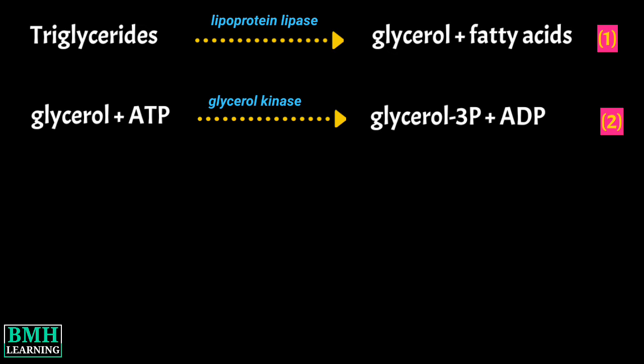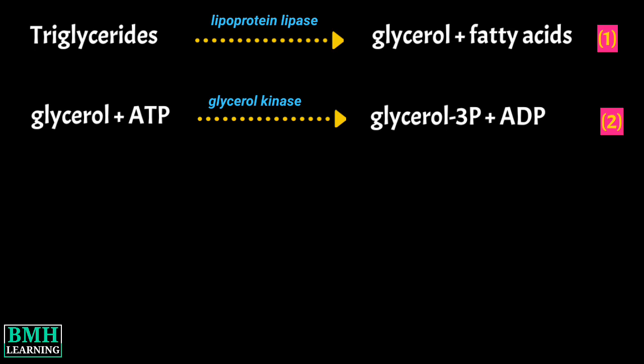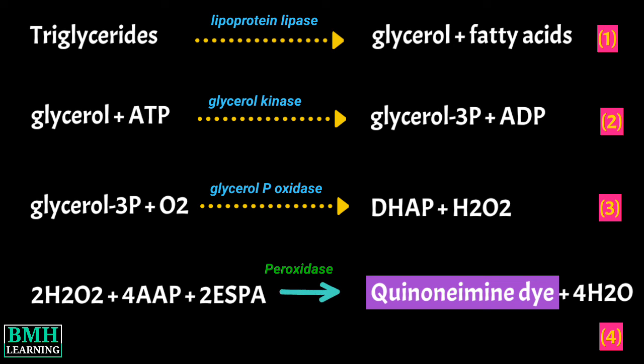The glycerol released is subsequently measured by a coupled enzymatic reaction system. The glycerol formed in reaction 1 is phosphorylated to glycerol 3-phosphate in a reaction catalyzed by glycerol kinase. The glycerol 3-phosphate is oxidized by glycerol phosphate oxidase producing dihydroxyacetone phosphate and hydrogen peroxide. Peroxidase catalyzes the redox coupled reaction of hydrogen peroxide with 4-amino-antipyrene (AAP) and ESPA, producing a brilliant purple color whose absorbance is measured at 540 nanometers.